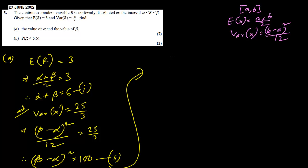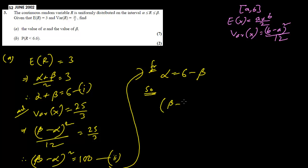We can solve these two equations simultaneously. From equation 1, alpha equals 6 minus beta. Substituting into equation 2, we get beta minus (6 − beta), all squared, equals 100.